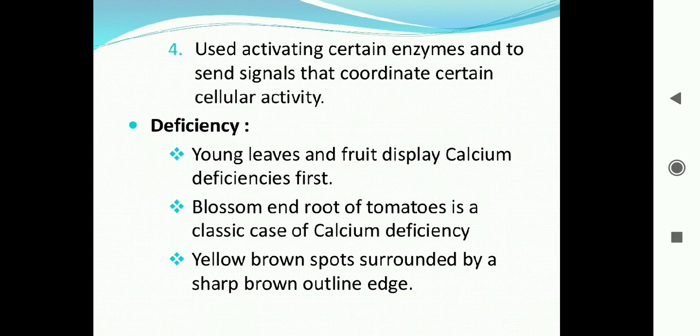Deficiency symptoms of calcium: young leaves and fruits display calcium deficiency first, because calcium is an immobile element and cannot move from one place to another. So deficiency symptoms appear firstly on young leaves and fruits. Blossom end rot of tomatoes is a classic case of calcium deficiency.